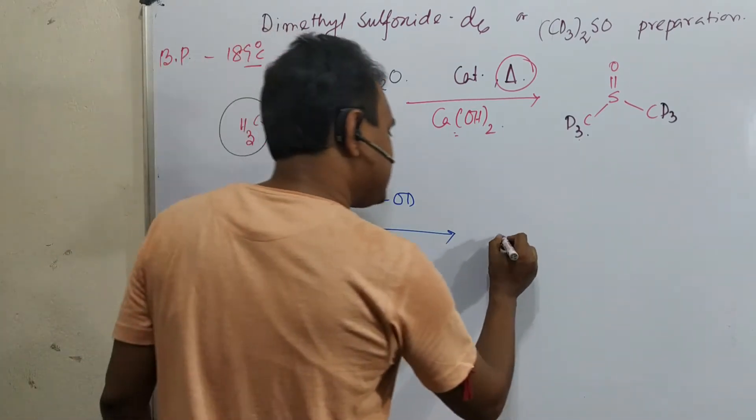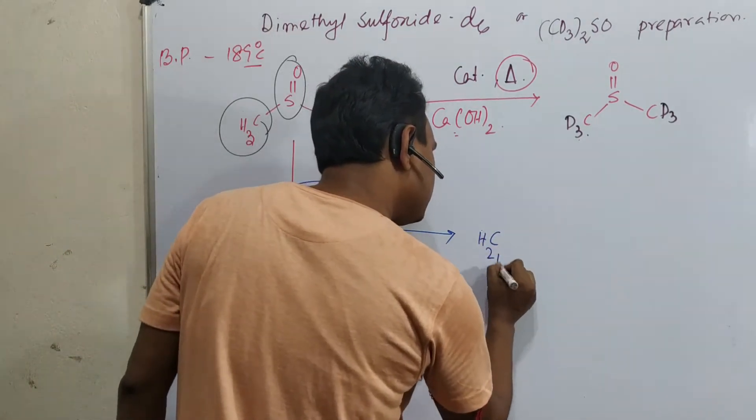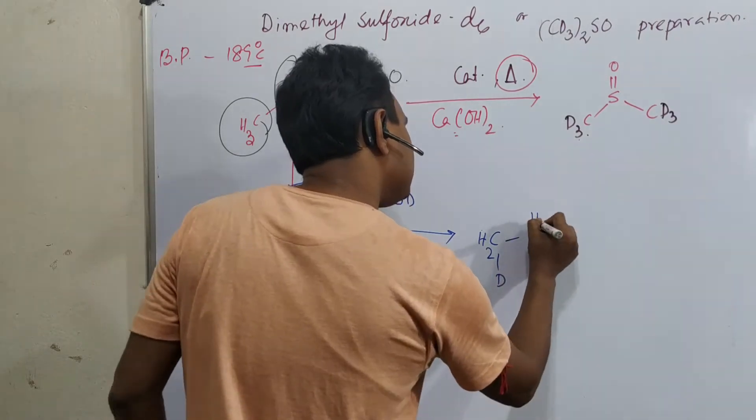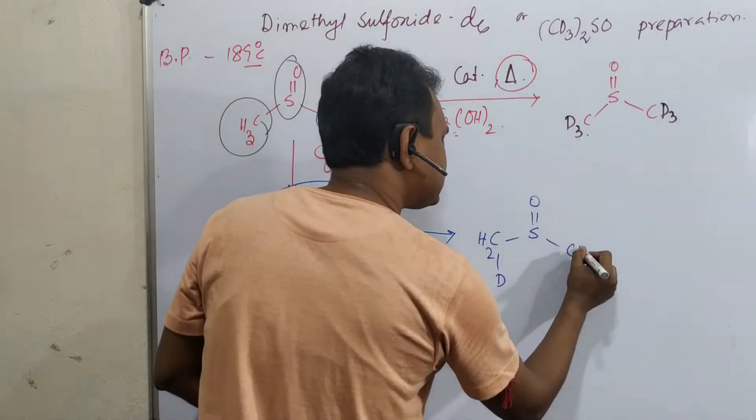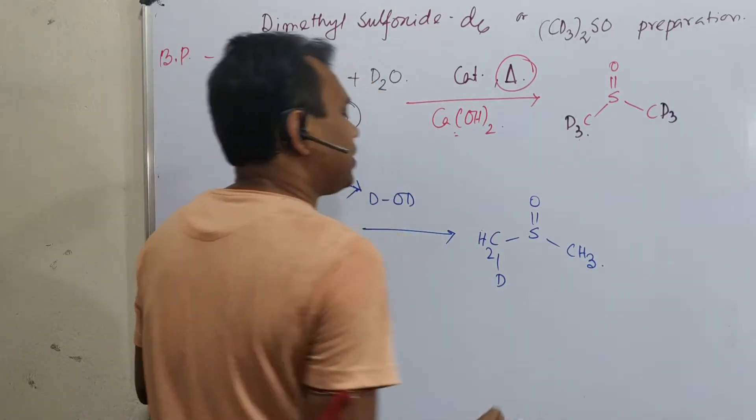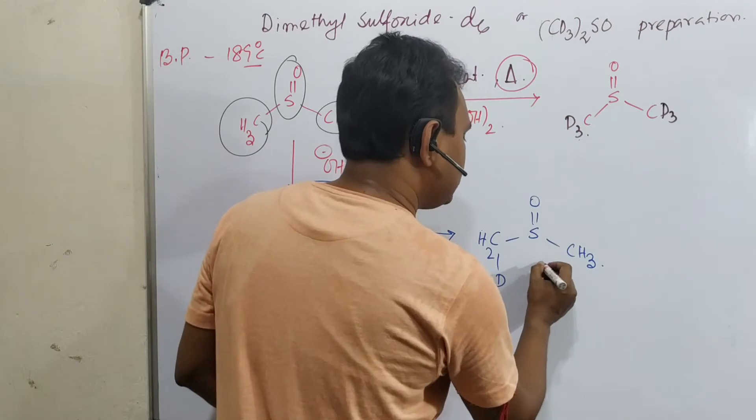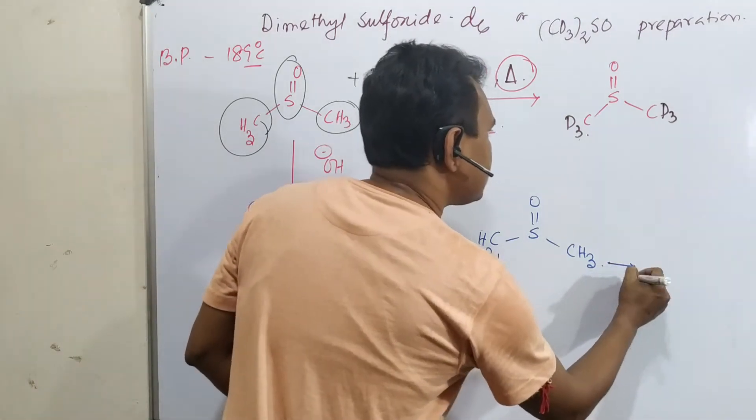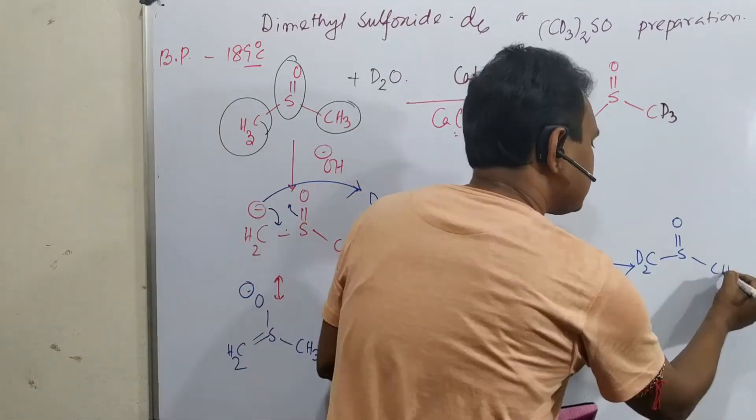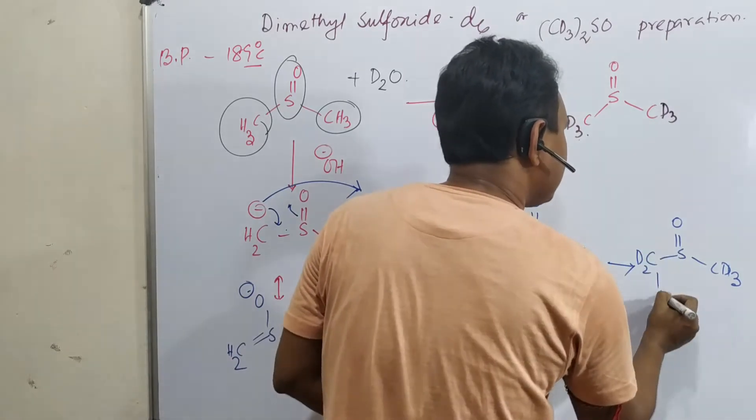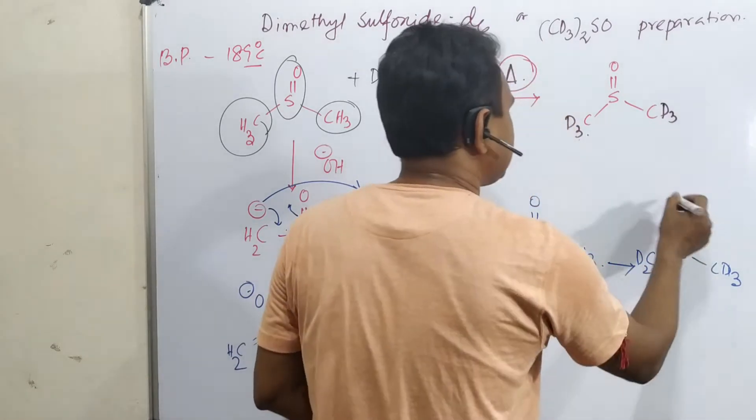In next step, what it does? It takes proton from deuterium, D2O. And what it produces? CH2D, this, with CH3. Now as I told, the deuterium bond is stable, so slowly all will be converted.